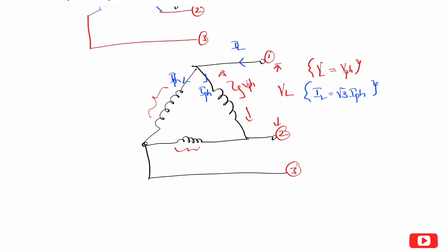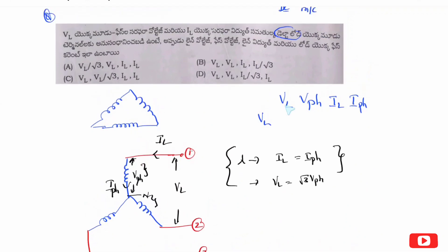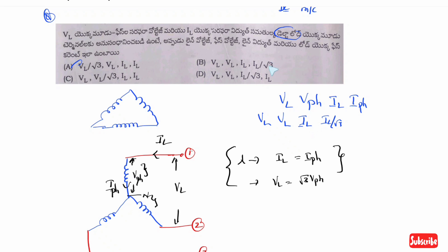So, line current is equal to root 3 times phase current. Line voltage is Vl. Phase voltage is equal to line voltage, which is Vl. Il is equal to line current. I phase is equal to Il divided by root 3. Since line current is equal to root 3 times I phase current, then I phase current is equal to Il divided by root 3. Option B is the right answer.